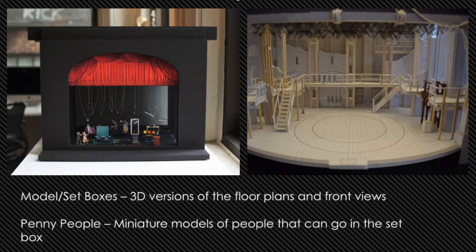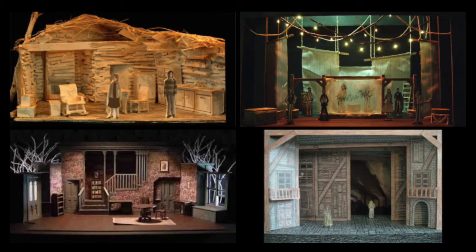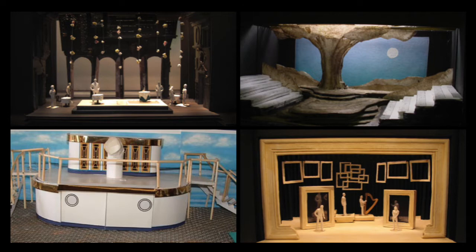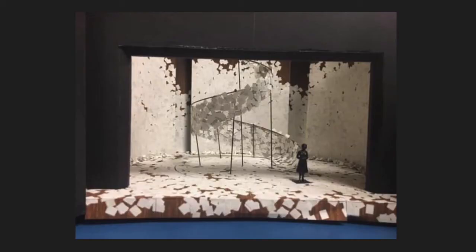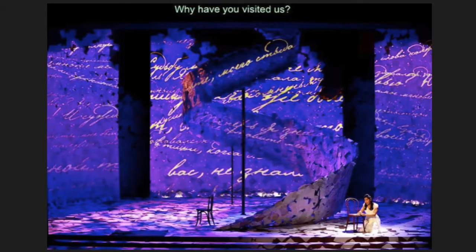After the floor plan and the ground plan have been created, then it's time to build your set model box. This is just a 3D version of the floor plan and the front view. Sometimes set designers will even build little penny people to show the scale of how big a person will be compared to the set. Here are some fun examples of what other designers have done — from a variety of different musicals and plays like Les Mis and The Fantasticks. Notice they use lots of different levels and different designs; they even have things hanging from the fly system. Here's an example of how a set designer designed their set, made a model box, and then built it and added lights.